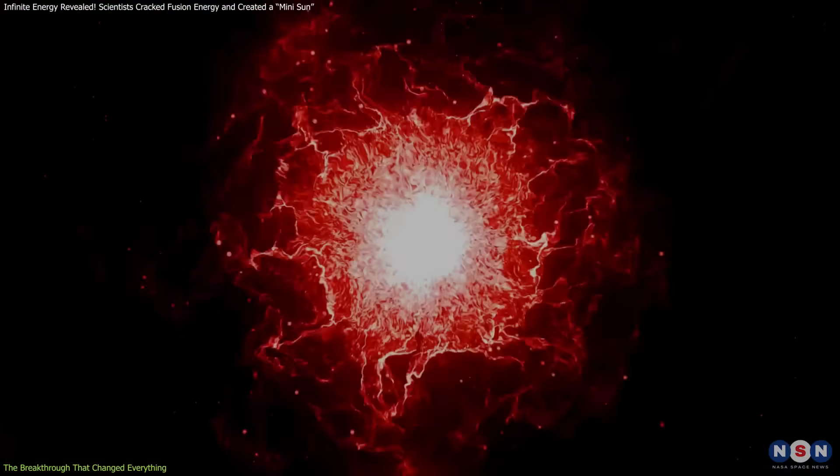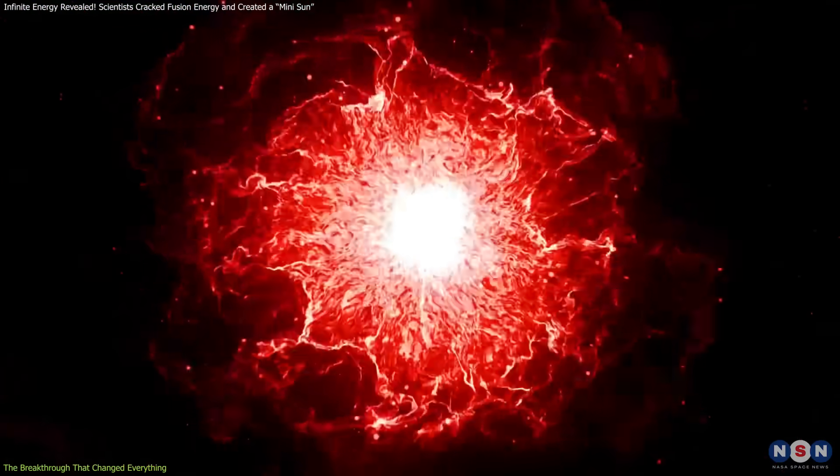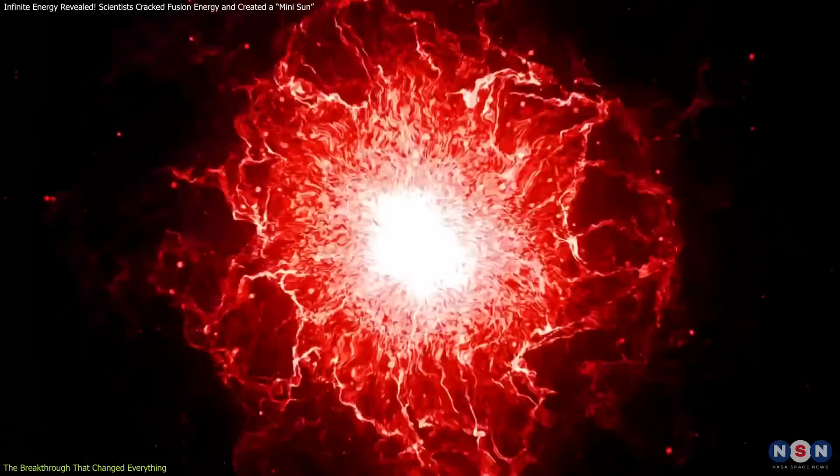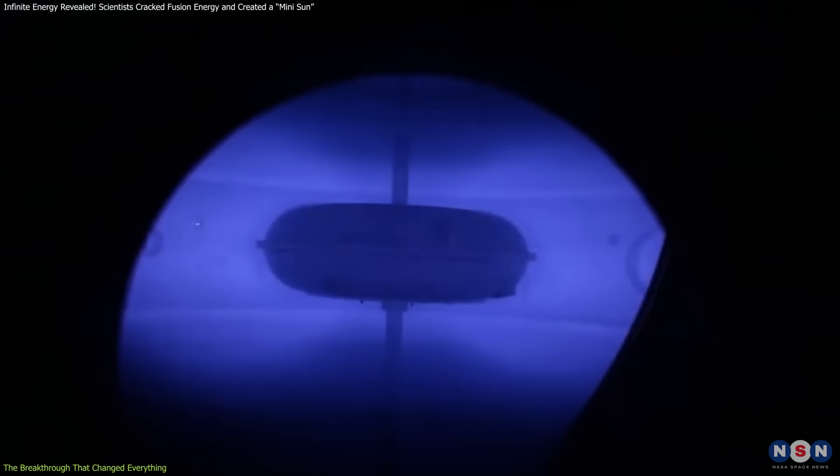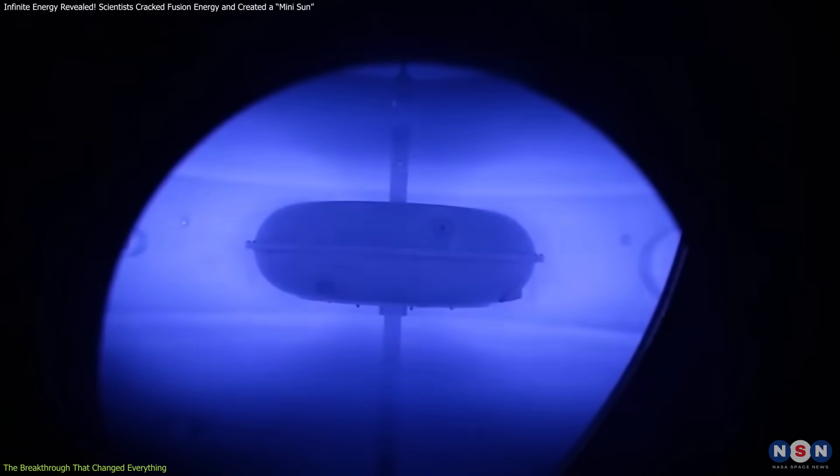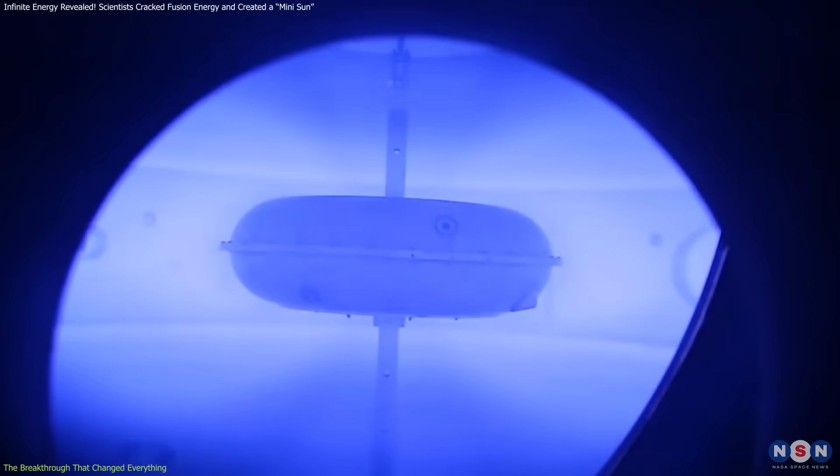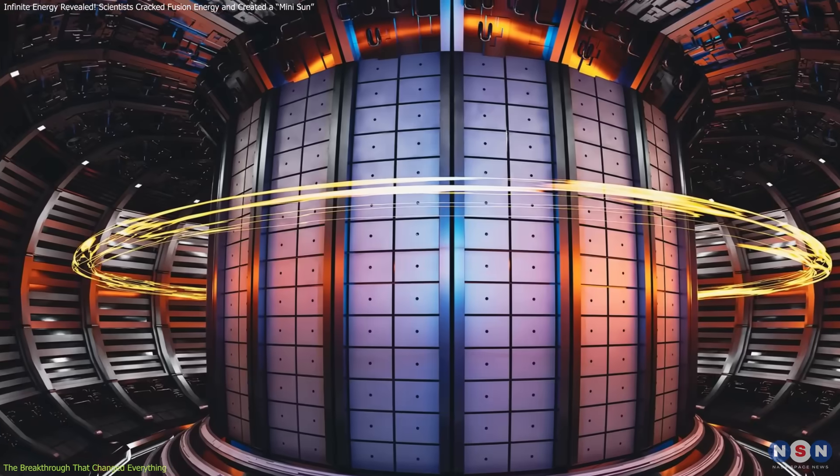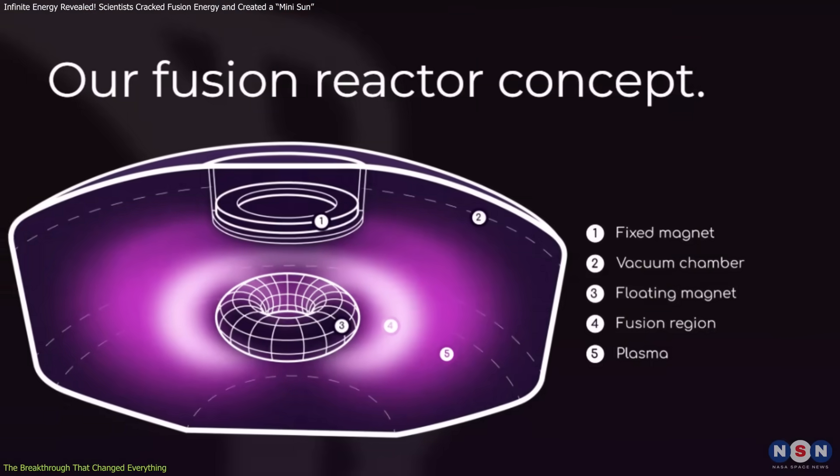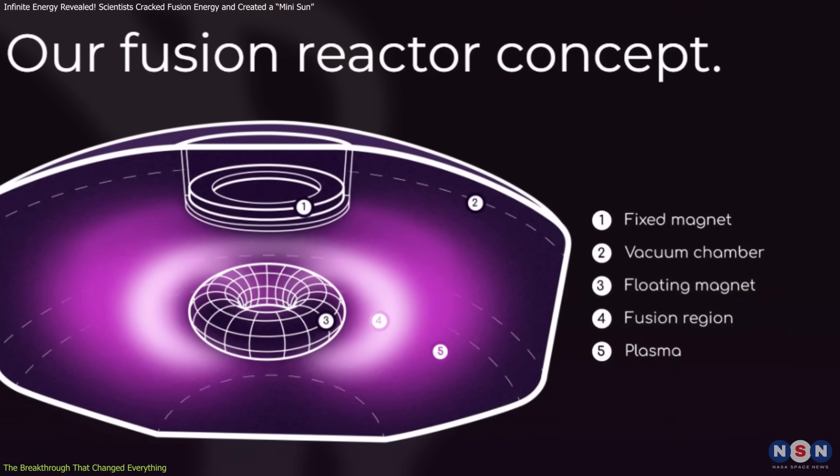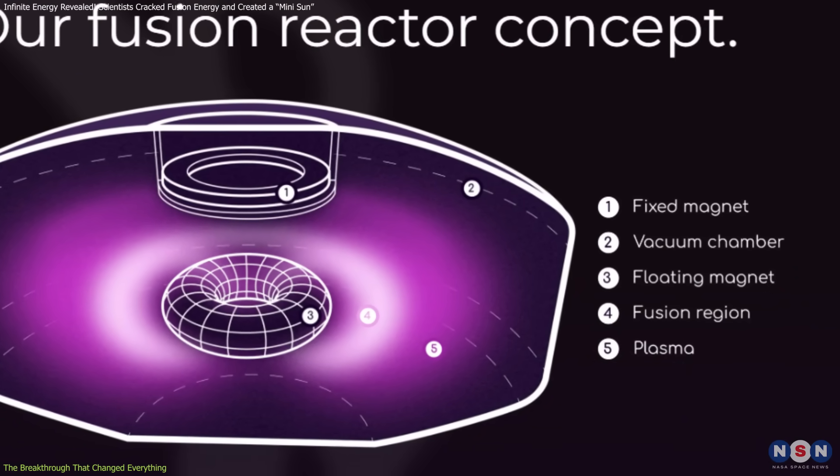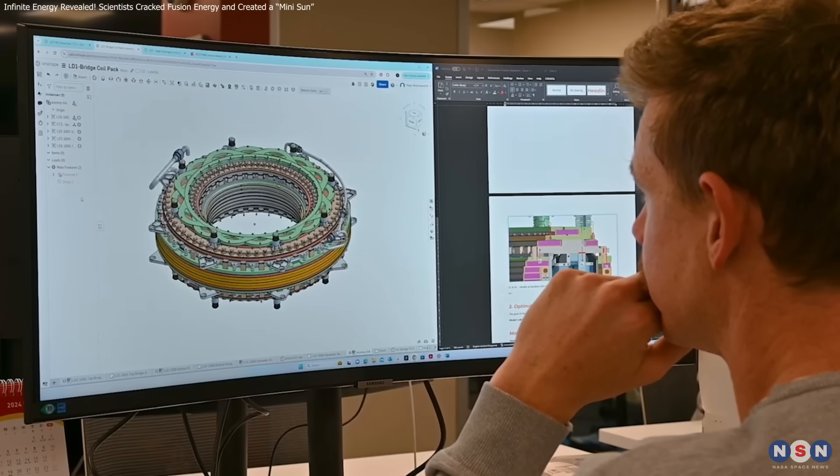This milestone proved that we are getting closer to making fusion a practical, long-term energy source. Meanwhile, private companies are also making big leaps. A New Zealand startup called OpenStar recently created plasma at 300,000 degrees Celsius for 20 seconds, using a radically different approach. Instead of using massive magnets to control the plasma, they levitate a superconducting magnet inside the plasma itself, creating a simpler and cheaper design that could accelerate the commercialization of fusion energy.